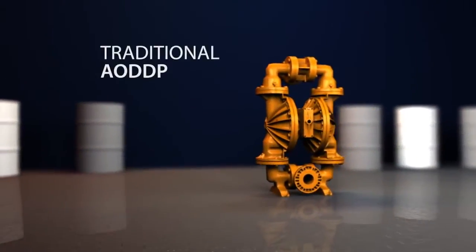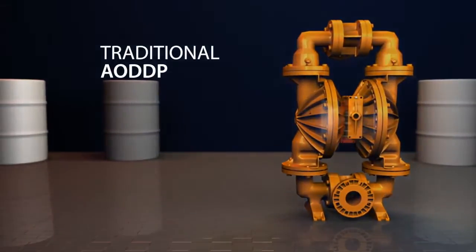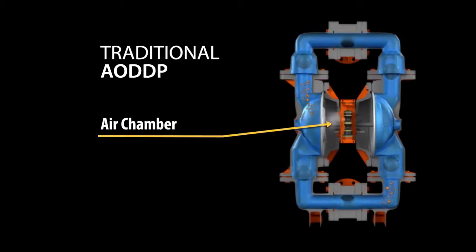For traditional air operated double diaphragm pumps, the air distribution system functions by filling the air chamber or diaphragm cavity with as much air as available, essentially overfilling the air chamber until the end of the stroke, thus displacing fluid on the wetted side of the diaphragm.